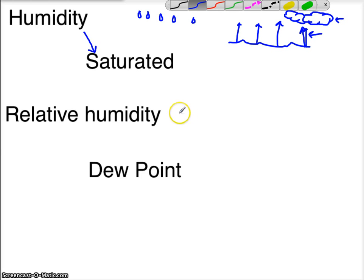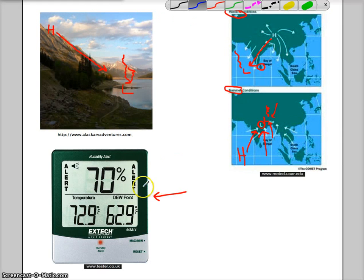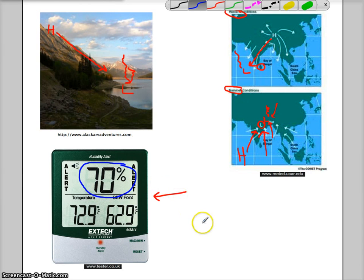Relative humidity is the same thing except it puts a percentage to the humidity. This percentage is the vapor that's in the air over the vapor that the air can hold. If you have it at 70 percent, then you can actually have more vapor in the air — it's a little bit muggy at 70 percent, but you still can have more vapor in the air.